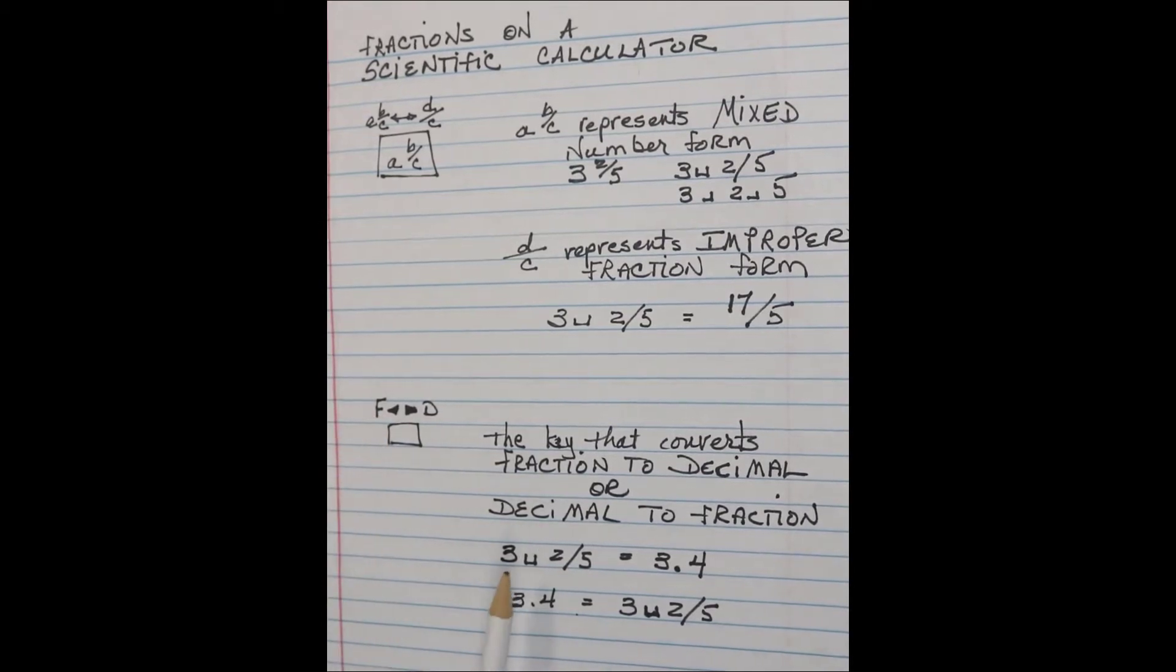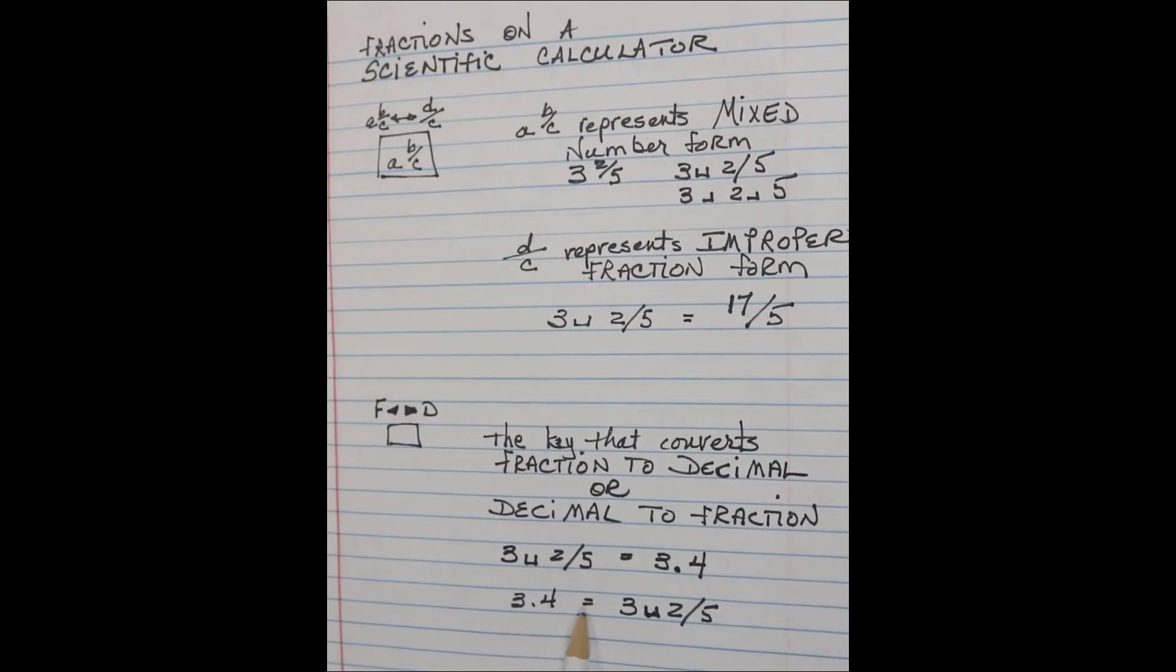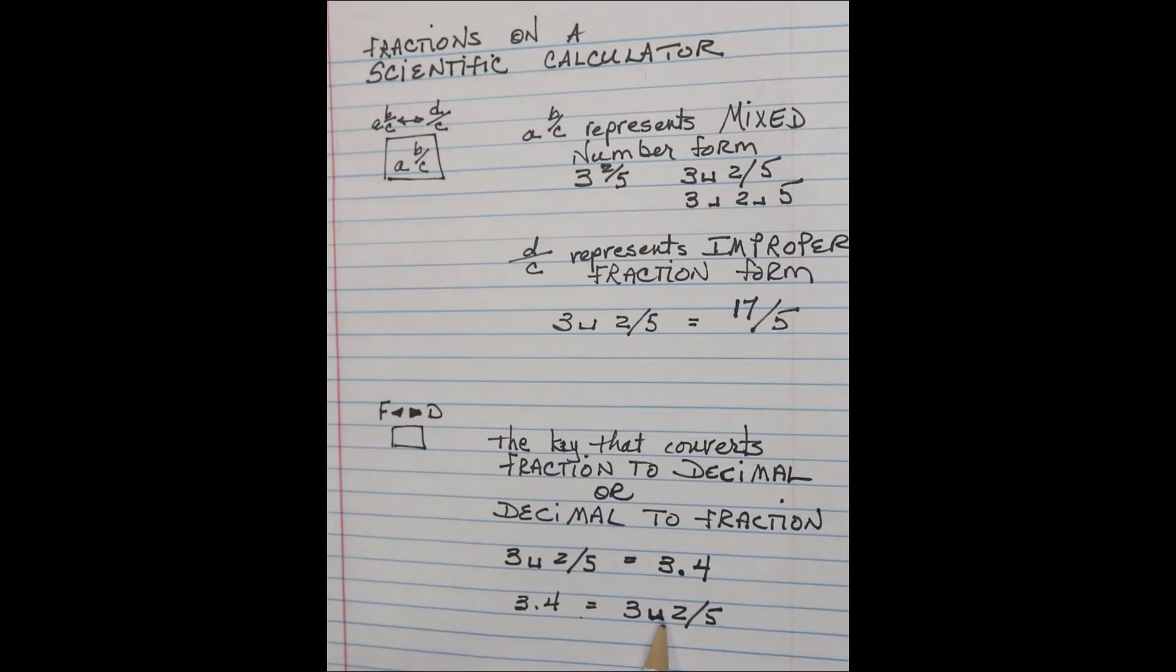So you can see here I have the 3 union 2 slash 5, which is 3 and 2/5, and when we convert that in a minute, it's going to look like this: 3.4 or 3 and 4/10. And then we'll be able to go back in reverse order and take the 3 and 4/10 and convert it back into mixed form.